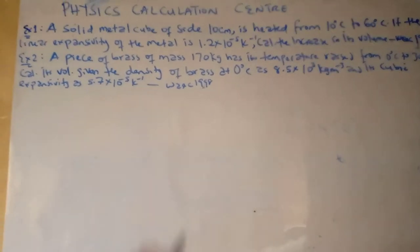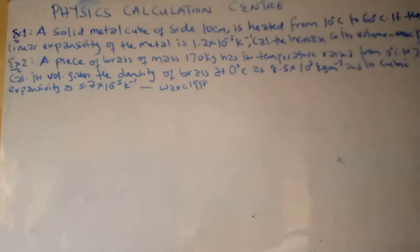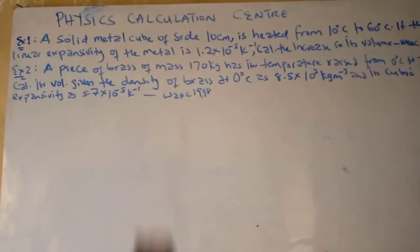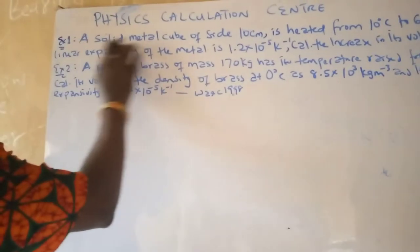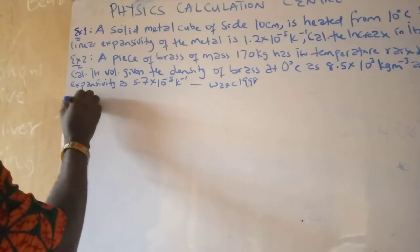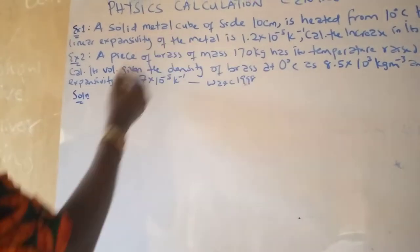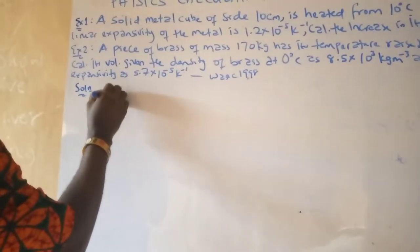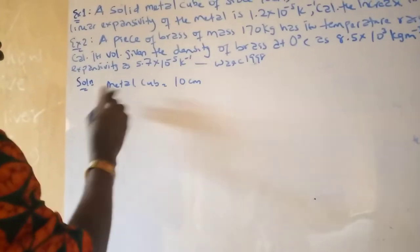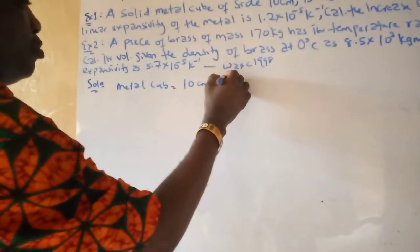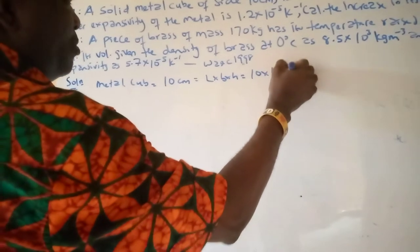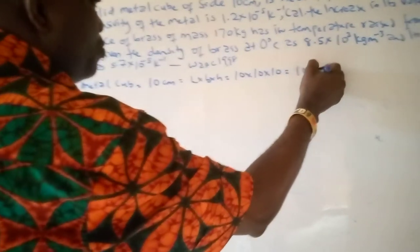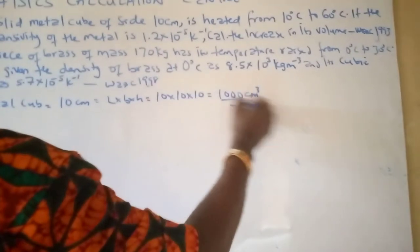The first thing we are going to do is write the parameters down. We have a metal cube — a metal cube has a side of 10 cm. So to get the initial volume, we do L × B × H, which gives us 10 × 10 × 10, which equals 1000 cm³. So that is the initial volume.